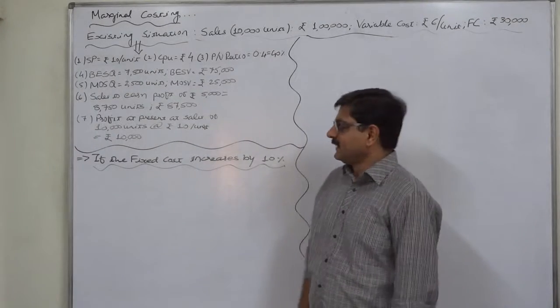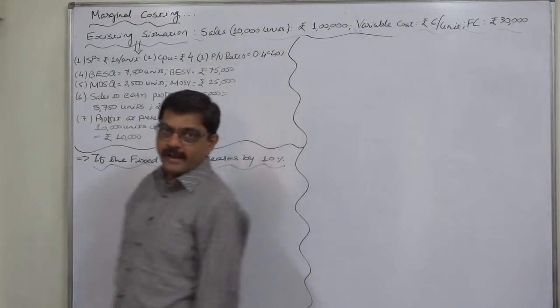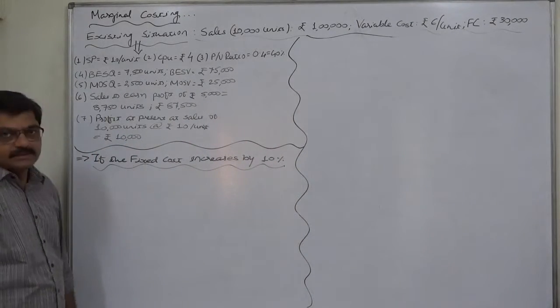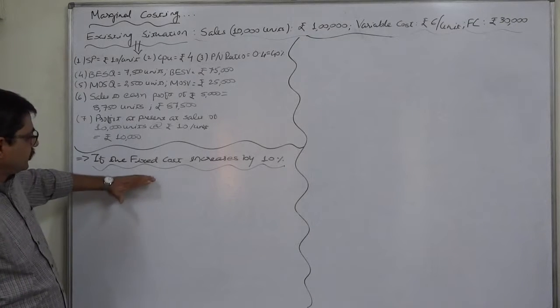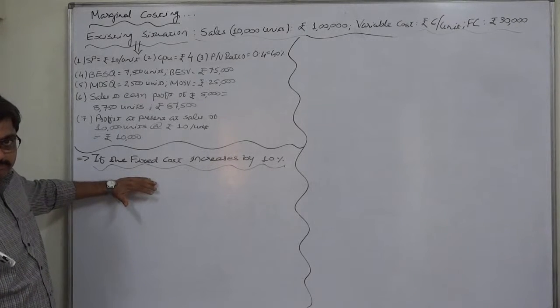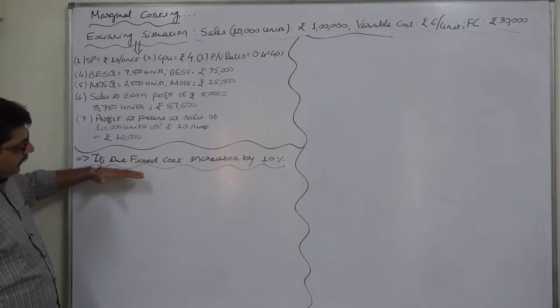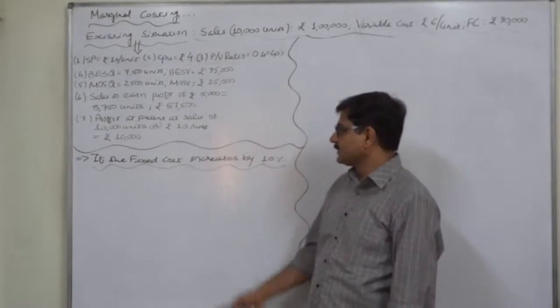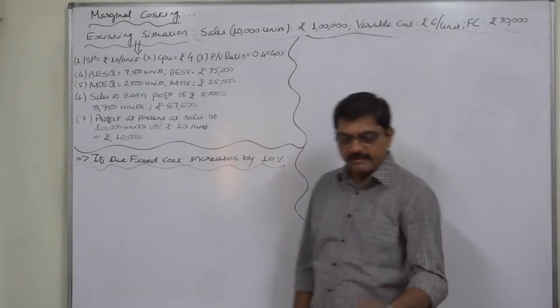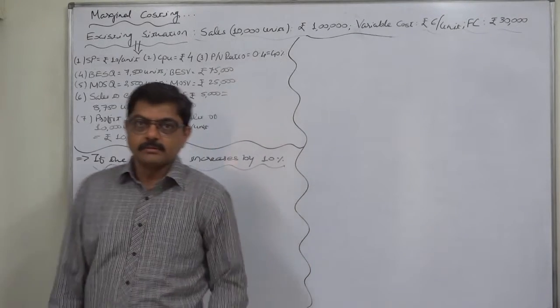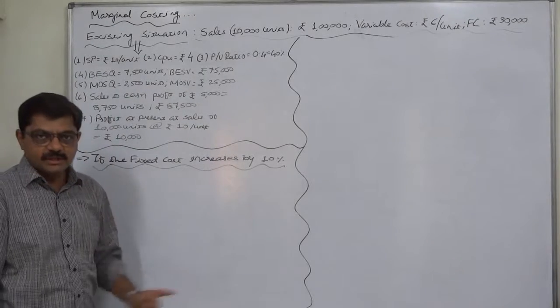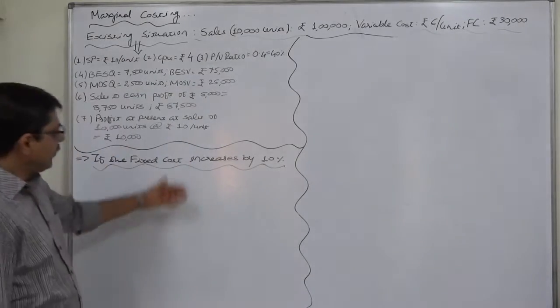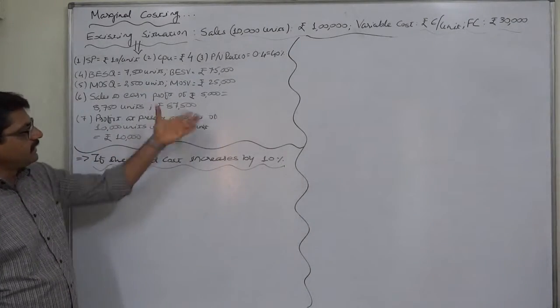Hello and welcome. Now the new angle in the same problem, the next possibility or the change in situation is if the fixed cost increases by 10%. The main thing is fixed cost or variable cost changes because of the effect of external or unavoidable or uncontrollable forces, so we have to bear it.